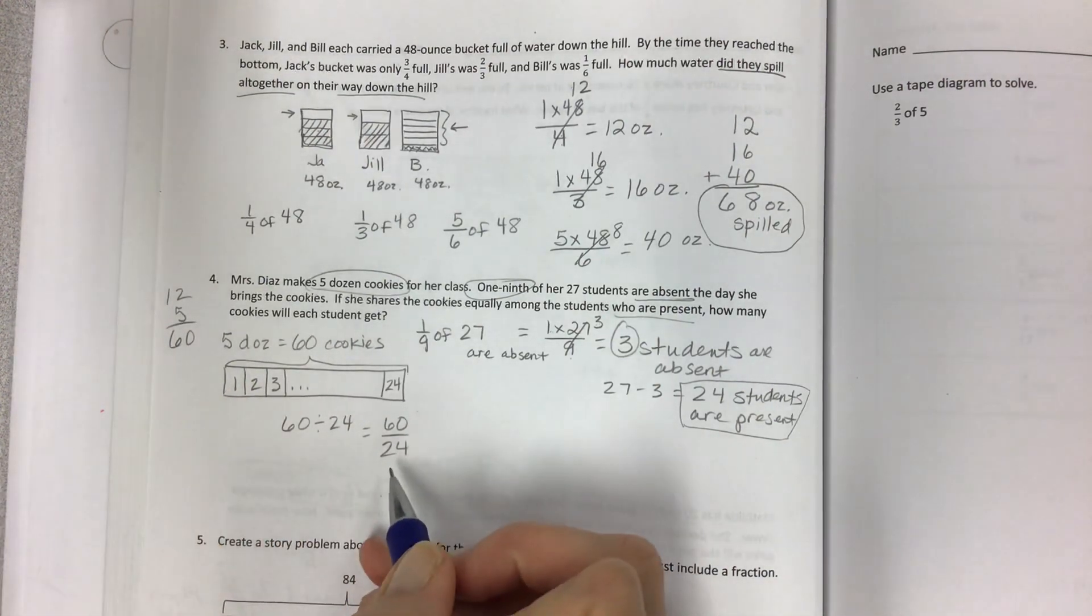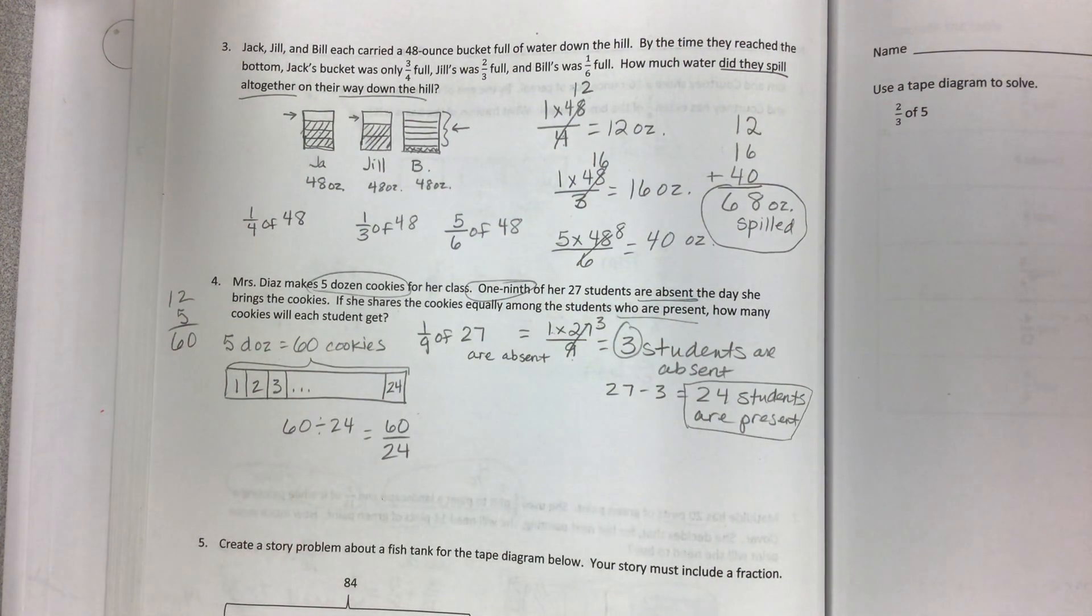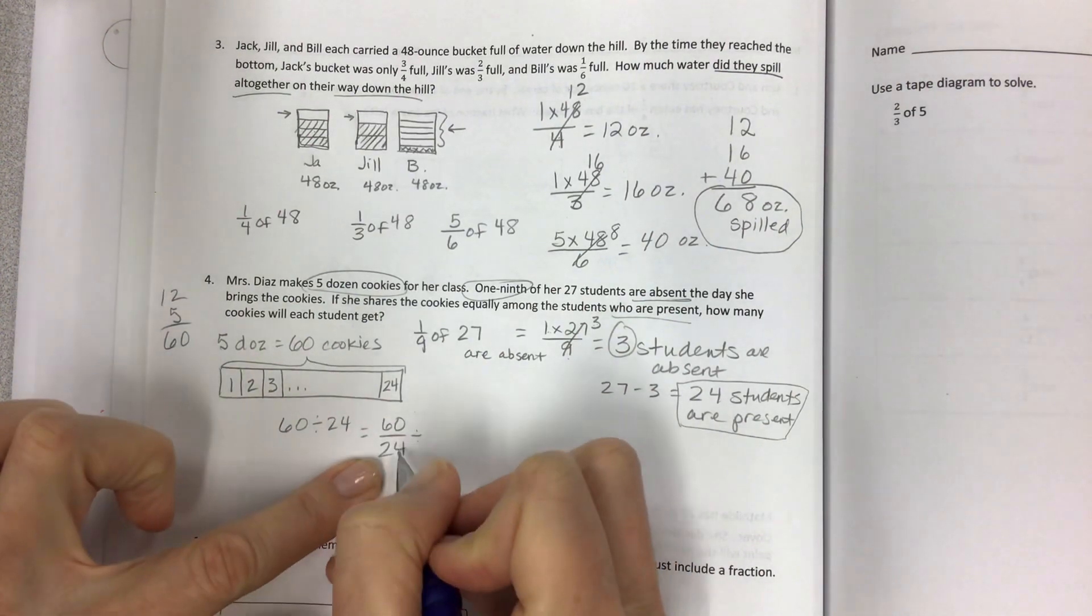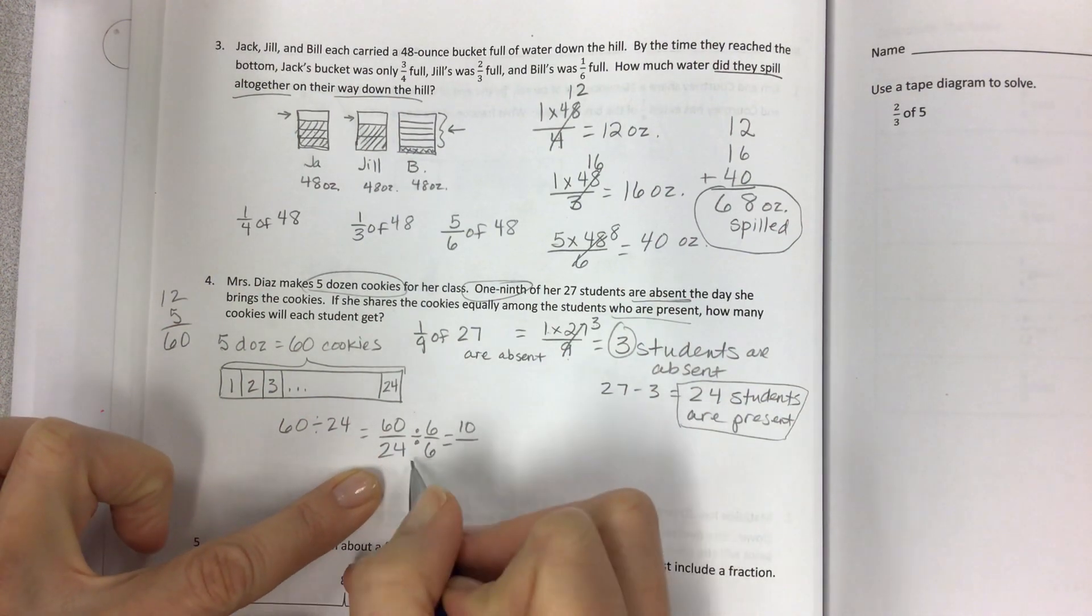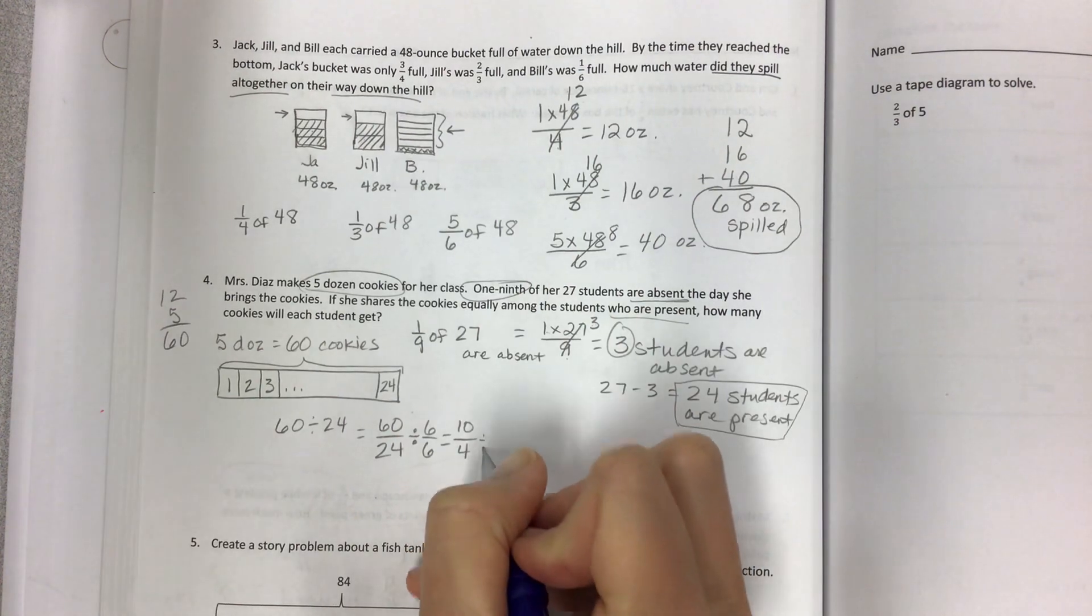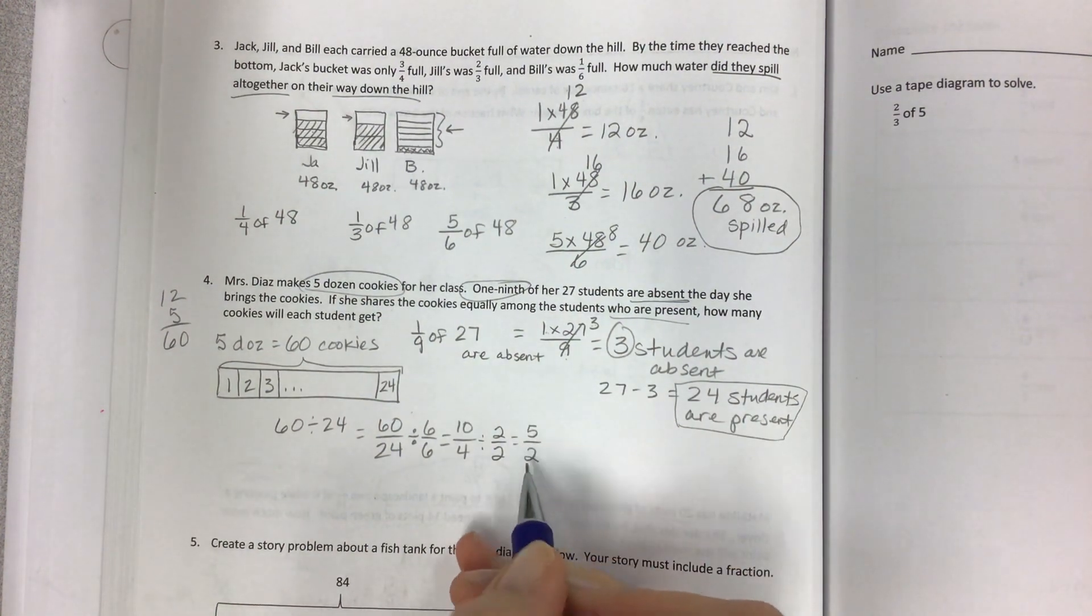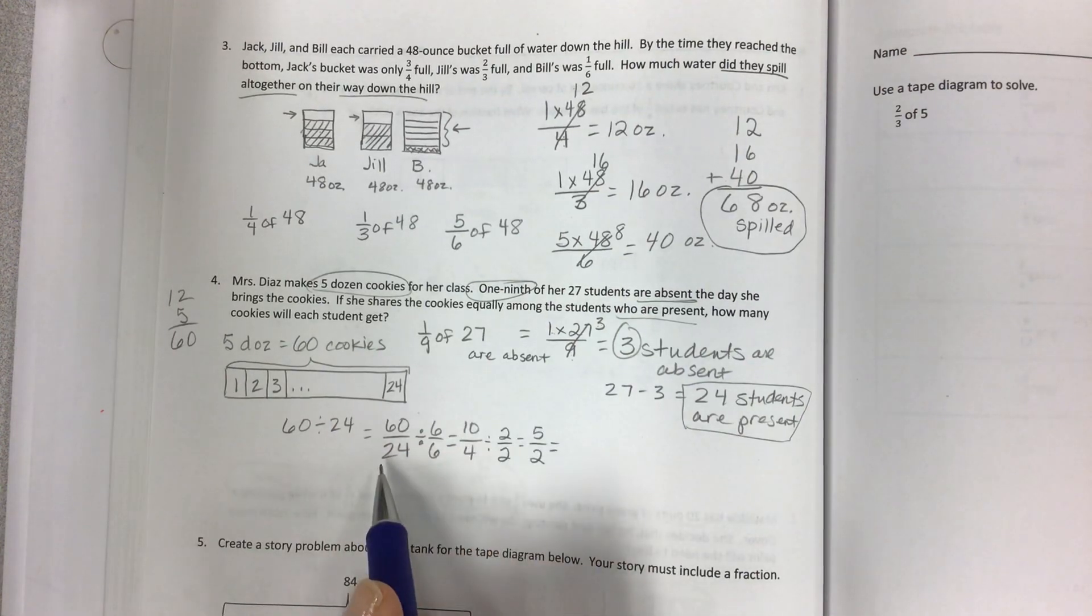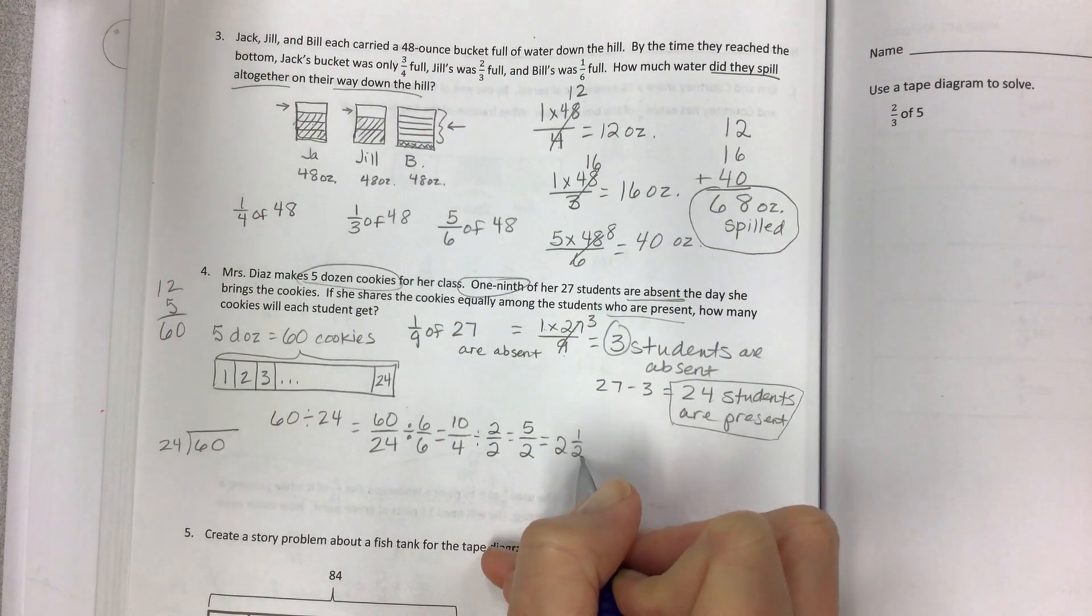Now check this out. If I have 60 divided by 24, look at this division problem. I could set it up and do the whole division problem. But if I simplify this before I do any division, I'm going to be able to divide smaller numbers. And I sure would love to do that. In fact, I notice that both of these numbers are divisible by six. So if you divide both by six, then you end up with 10 fourths. And if I was to recognize that 10 fourths is still divisible by two, I could shrink it down even more. 10 divided by two is five. Four divided by two is two. So if I shrink this down and simplify my division problem, I'm going to end up with two and a half cookies each.